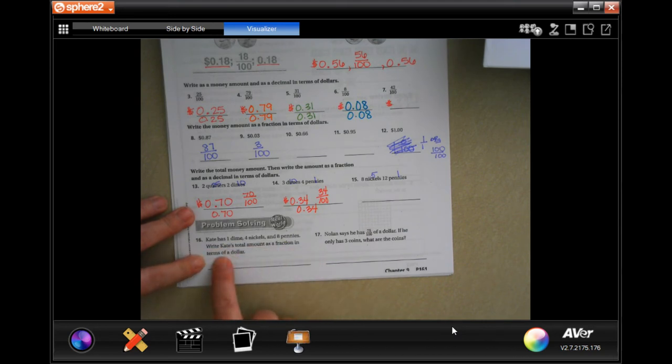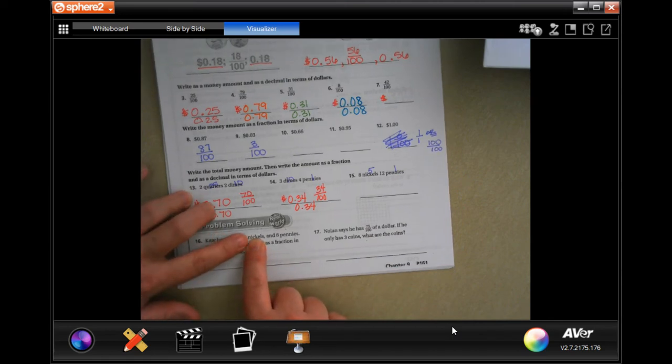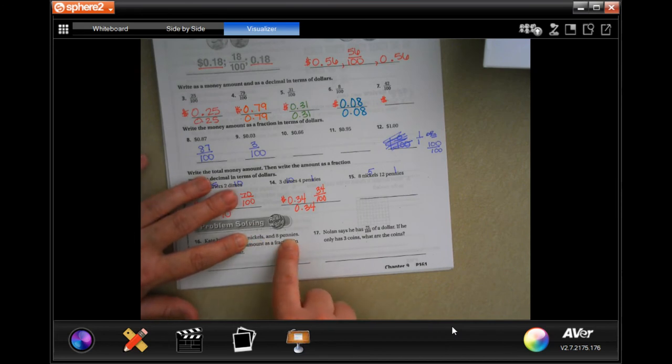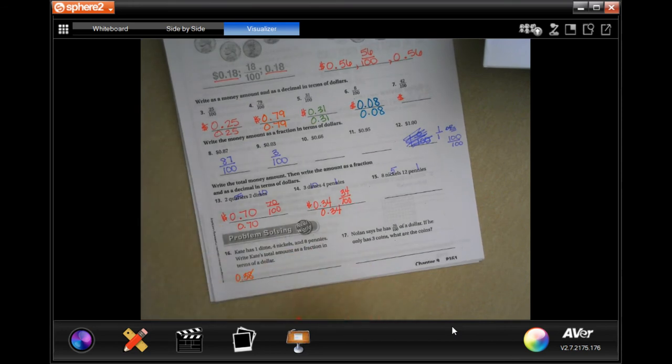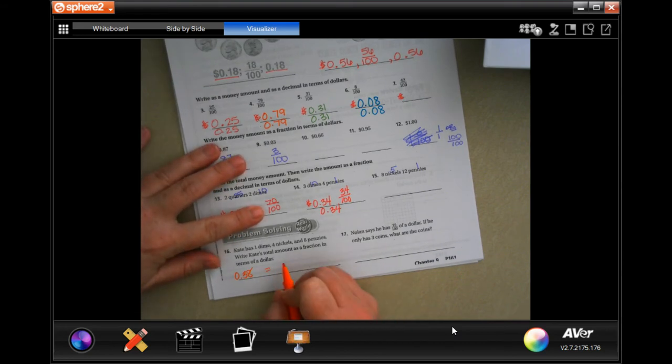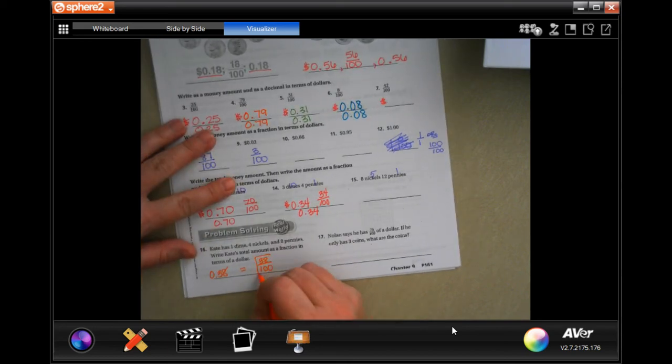It has one dime or nickels and eight pennies. Write Kate's total amount of the fraction in terms of a dollar. So, one dime, 10 cents, four nickels. Well, nickels are worth five cents. So that's four of those. That's another 20 cents. That's worth 30 cents. And eight pennies that are worth one. So, 38. So, 0.38. And it wants it as a fraction. So, 38. And that eight is in the hundredth spot. Done.